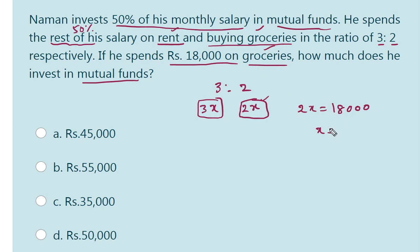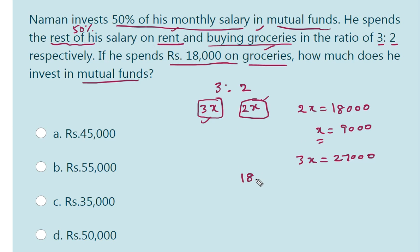So what is the value of x? It is 9,000. If we know x, we can find 3x — the amount spent on rent. 3x is equal to 27,000. So the total of the remaining 50% — rent plus buying groceries — rent is 27,000.